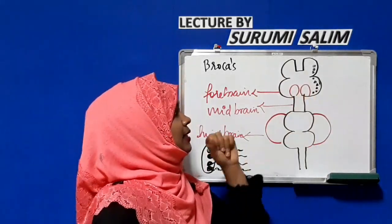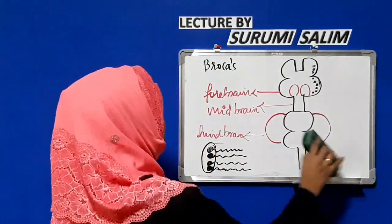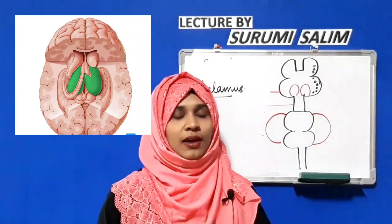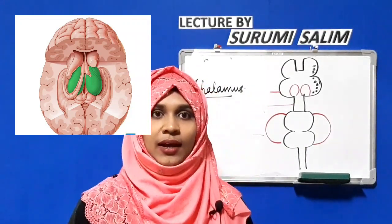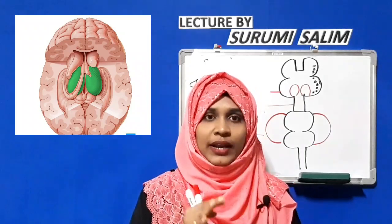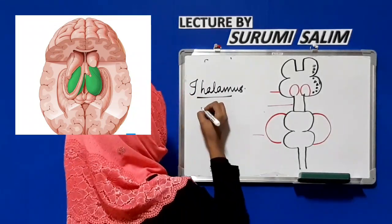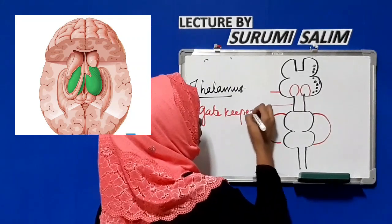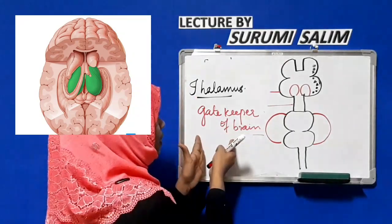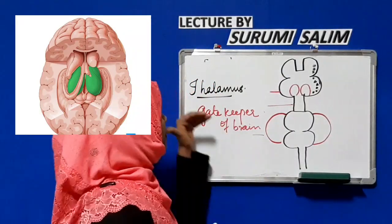Now we will see the diencephalon, which consists of the thalamus and hypothalamus. The thalamus acts as the gatekeeper of the brain — it helps in distinguishing which sensory impulse will go to the brain. It is the relay station that regulates which impulses should enter the brain.